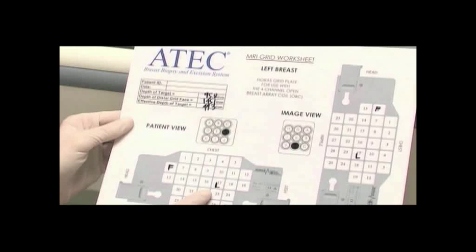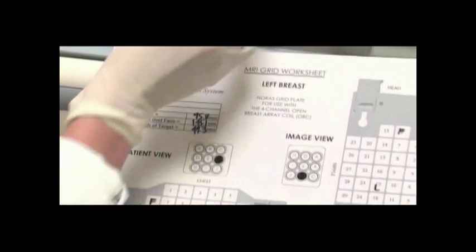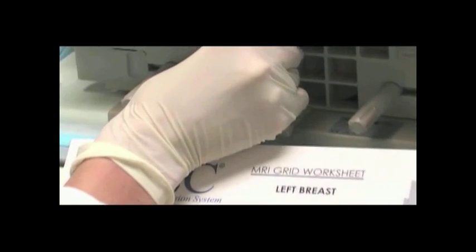Looking at the compressed breast in the grid, match the location marked on the grid worksheet to the actual compression grid square. Insert the nine-hole needle guide in the appropriate grid space based on the targeted calculation.